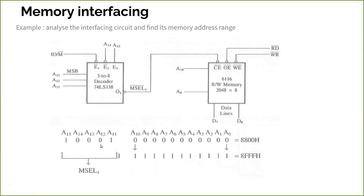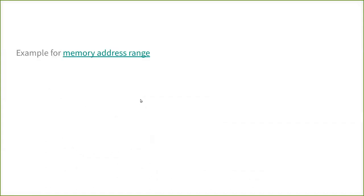So 10001, then all these things range from 0 to all 1. So if you split it as 4-4 bits, for this it is 8, and this is also 8. So 88 to 8F. Here it is 88, here it is 8F - 88FFH is the address range of this chip. This is how we analyze the circuit.